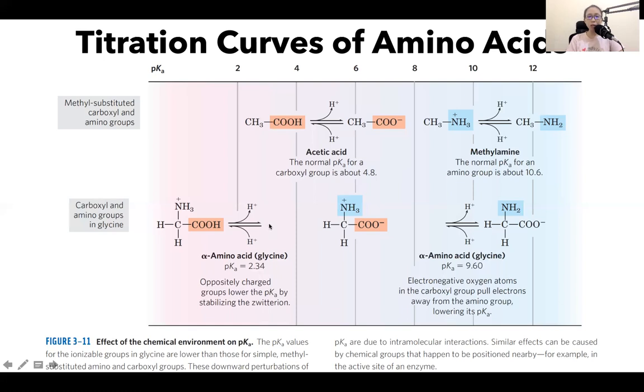So what does this mean? Which of these two will have a higher tendency to give off its proton? It's the one from glycine, right? Why is this the case?